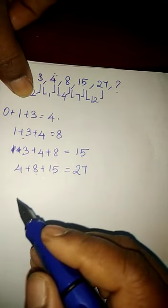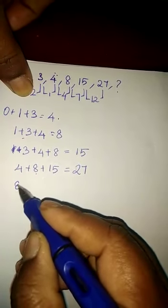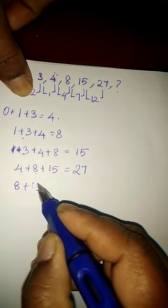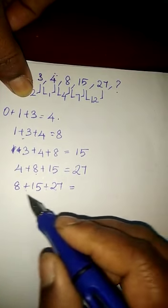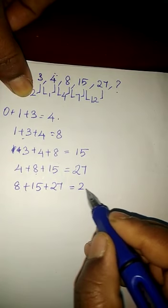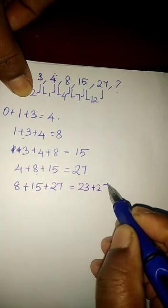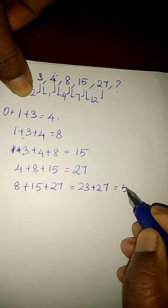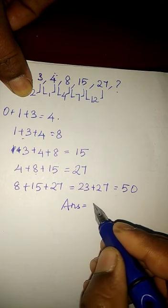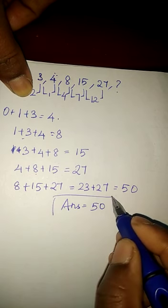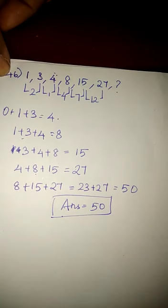Then what will come next? Yes, 8 plus 15 plus 27 gives 23 plus 27 which is 50. Hence the answer is 50. This is the difference method. Please note down it.